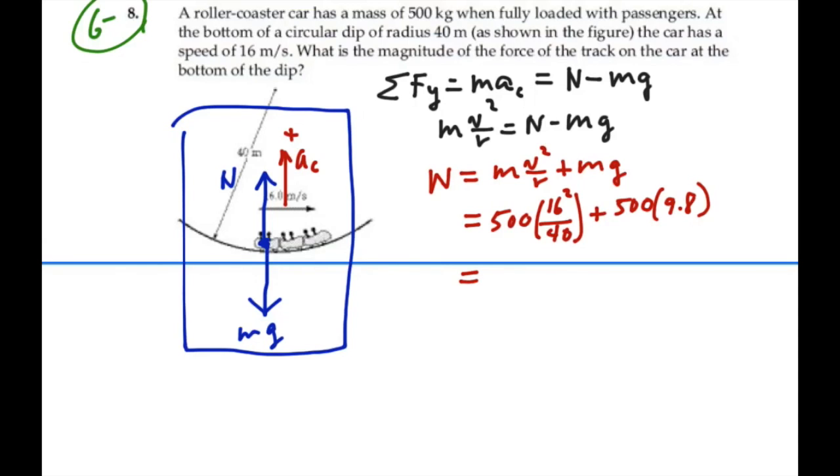So what is that? If I take 16 squared divided by 40 times 500, plus 500 times 9.8, I get 8,100 newtons.